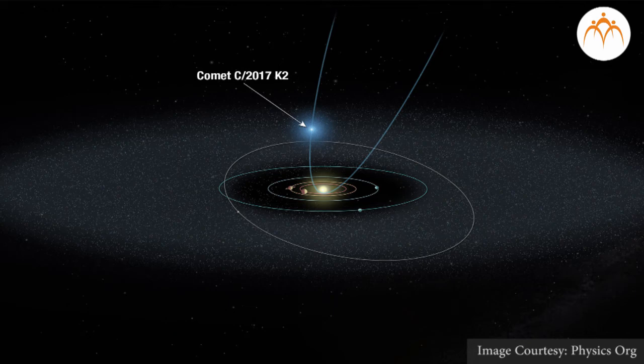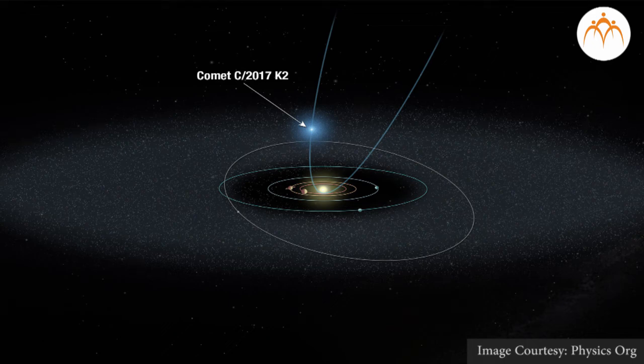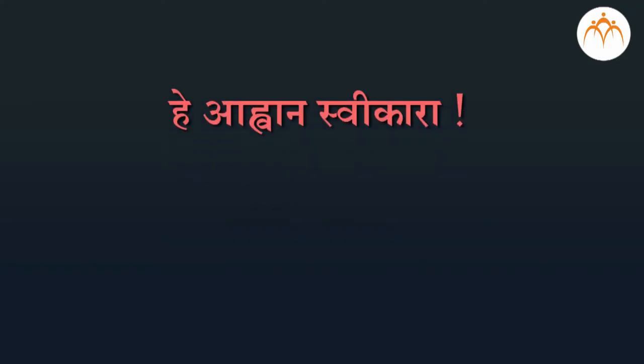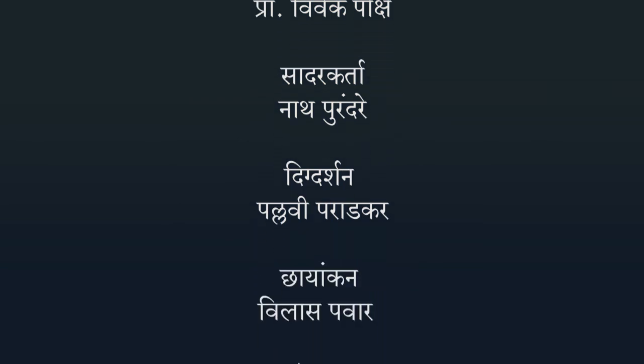તે આંચી જી ભ્રમળ કખ્શા સ્તે તી અનવસ્તા કર કેવાં પેરાબોલી કશતે કેપલાર પહેલે નિયમાત આસે મરતો કરાહાં જા જા ભ્રમળ કખ્શા હેત યાં સગળા કા઱જેામાં